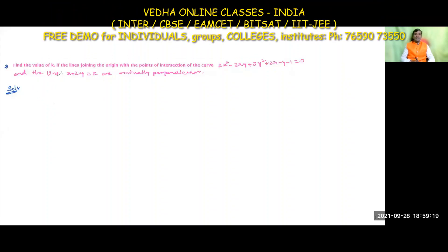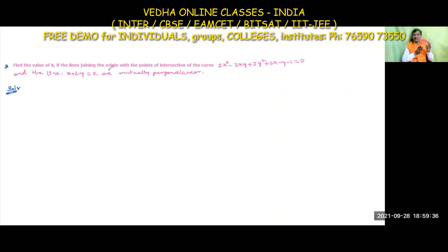Find the value of k if the line joining the origin with the points of intersection of the curve 2x² - 2xy + 3y² + 2x - 5y - 1 = 0 and the line x + 2y = k are mutually perpendicular. First, take the given curve equation and the line equation.